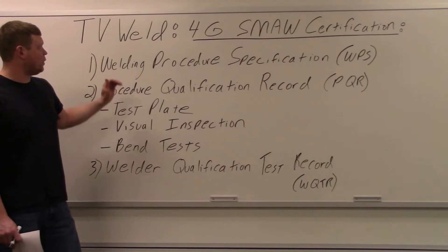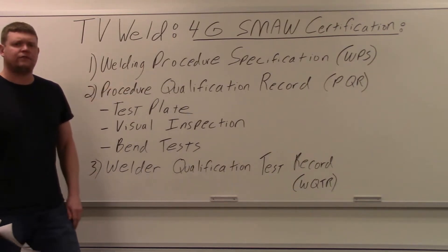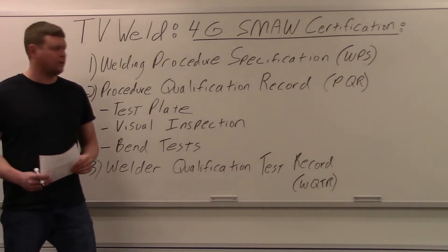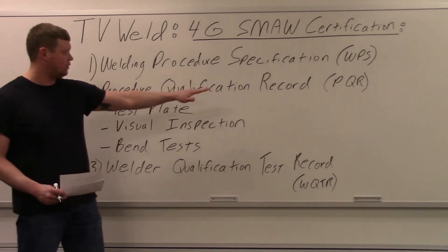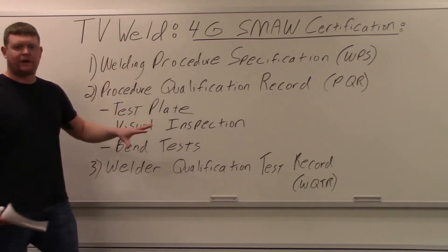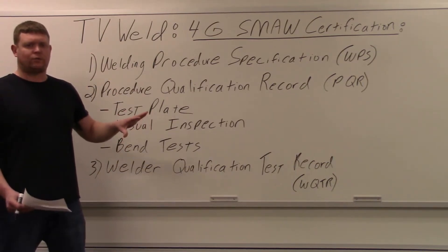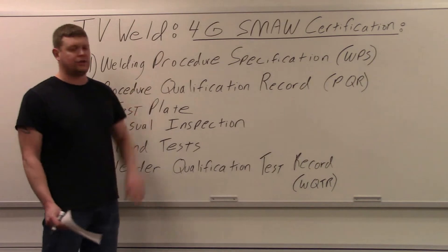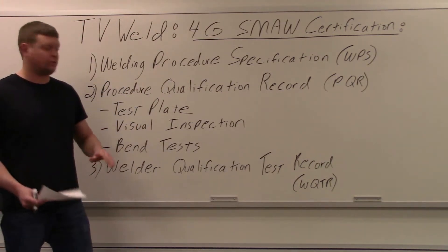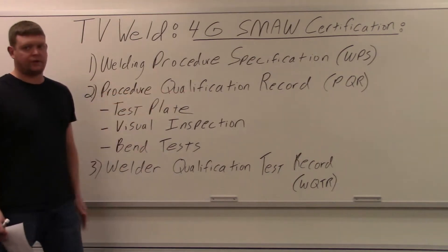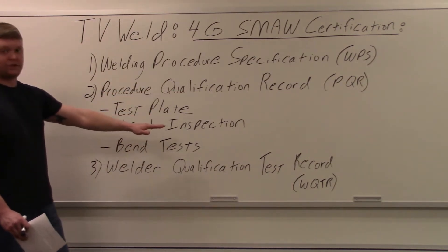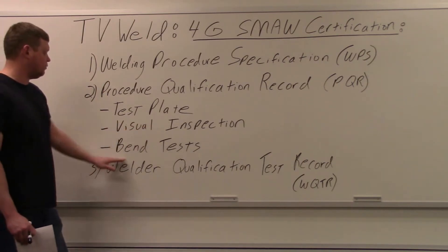So we already wrote a welding procedure specification that gives parameters that haven't been proven yet. You're going to prove the parameters through a procedure qualification record or PQR. Now I'm not going to actually show you how to write this stuff. I'm just going to do the actual welding. So you're going to see me do the 4G cert and then we're going to have to do a bend test to make sure that it's acceptable. You can see I got a test plate right here. Visual inspection is the first thing you have to do and then you have to do the bend tests.